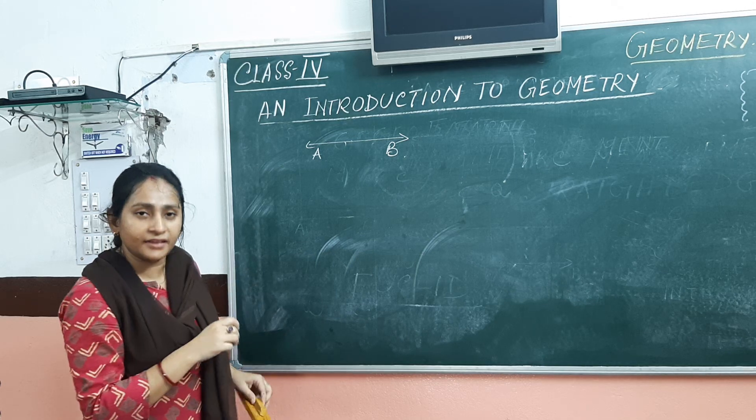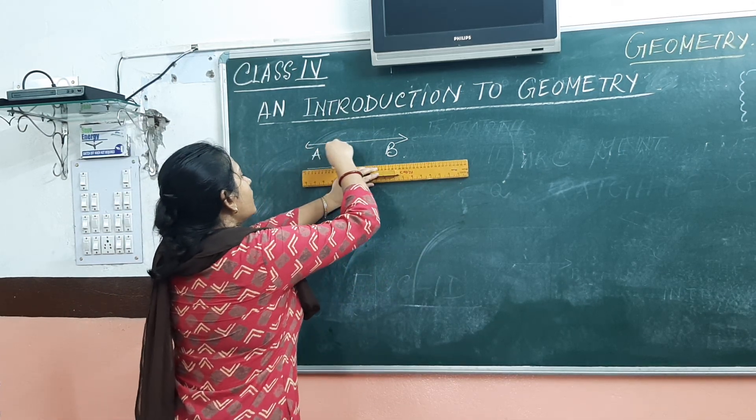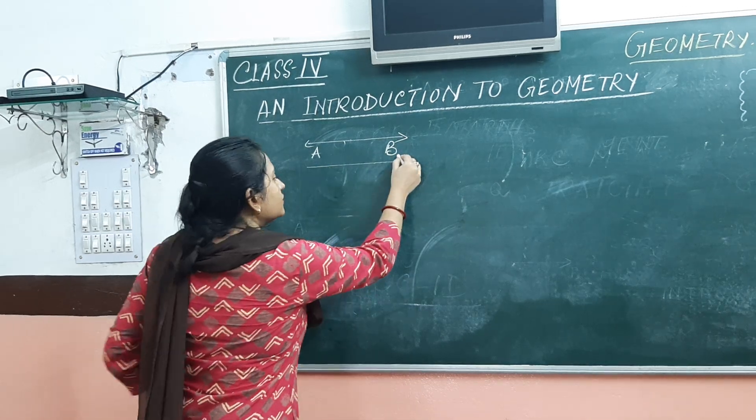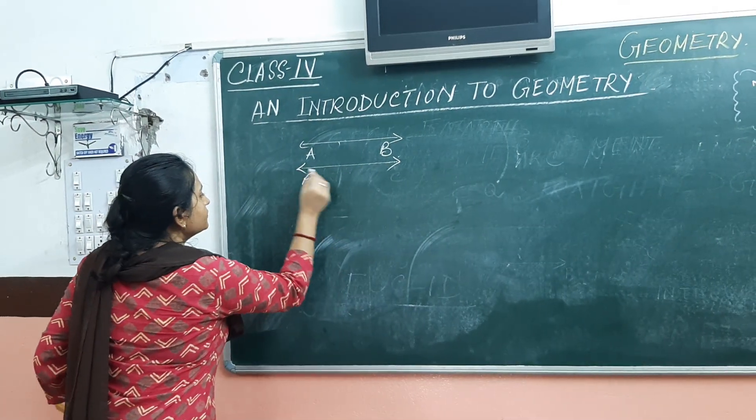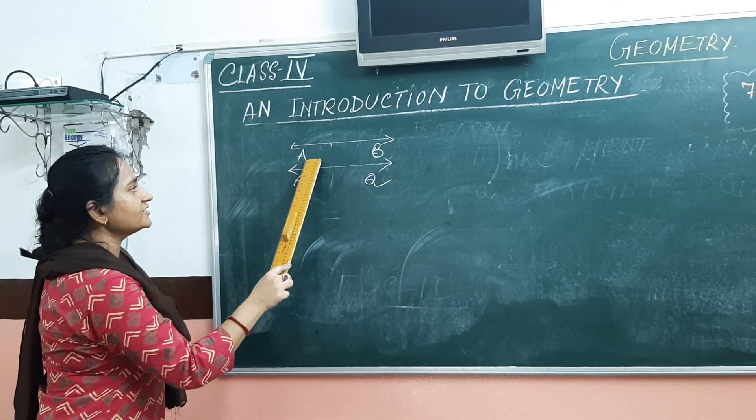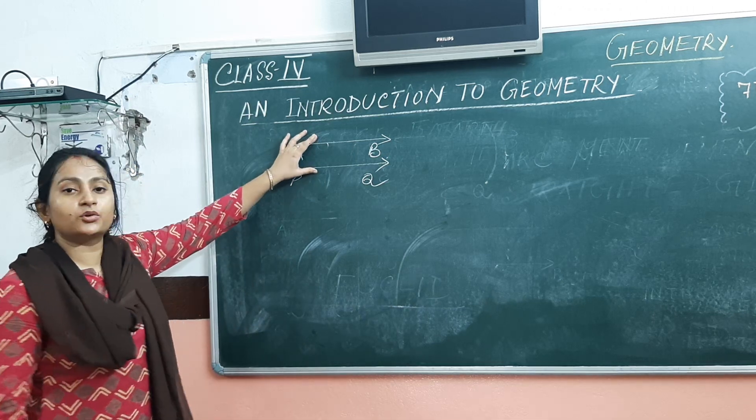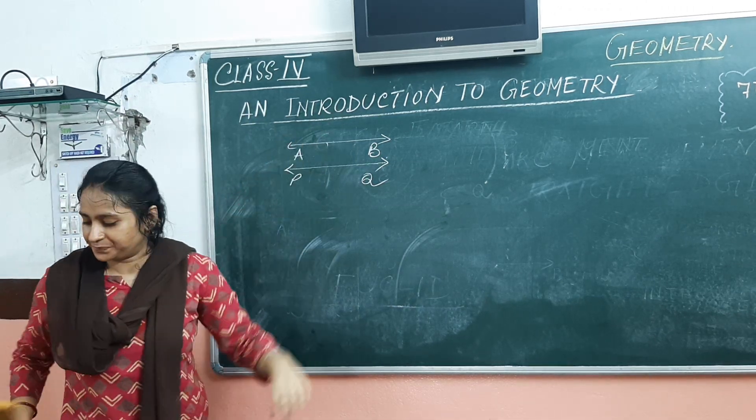This is line AB. If I draw another line just below this line which is CD, such that there is always the same distance between two lines, so these lines are known as parallel lines. And